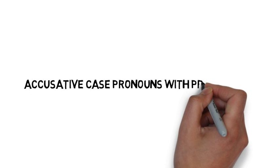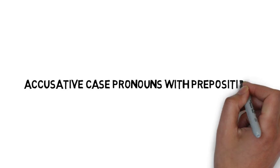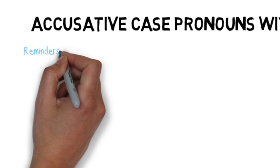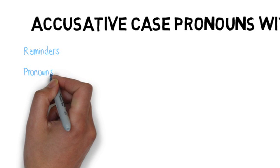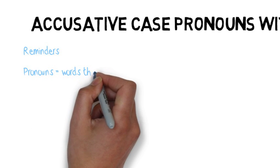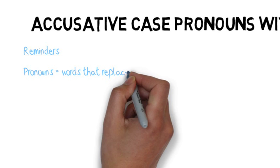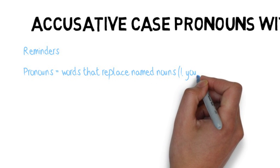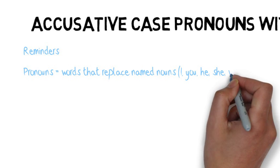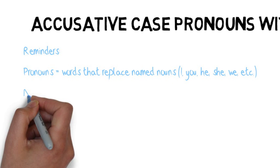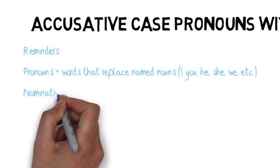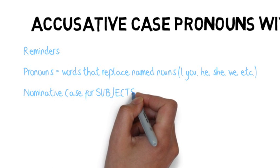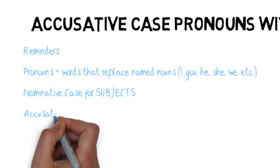You're already relatively familiar with accusative case pronouns — me, you, him, her, etc. — from having used them as the direct objects of sentences. For instance, you know that 'er' can be used as the subject of a sentence, but 'ihn' would be used to refer to the same person if it were the direct object. In German, the accusative case is also used following certain prepositions.